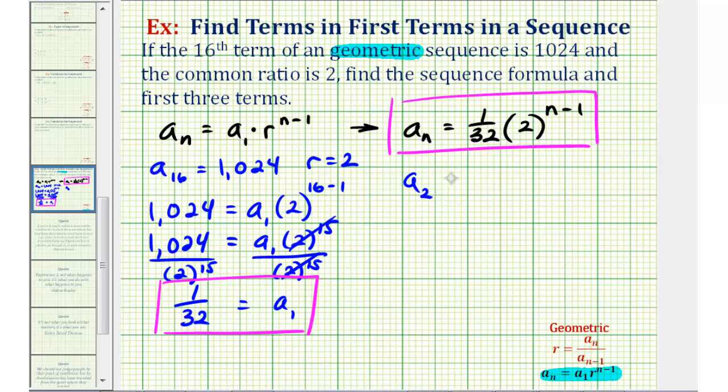So our second term, a sub two, is going to be equal to one over 32 times two to the two minus one power, our first power. This would be two over 32, or 1/16th.